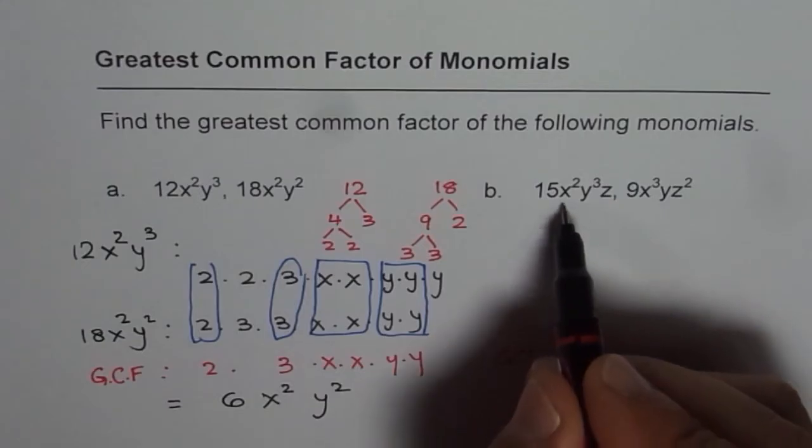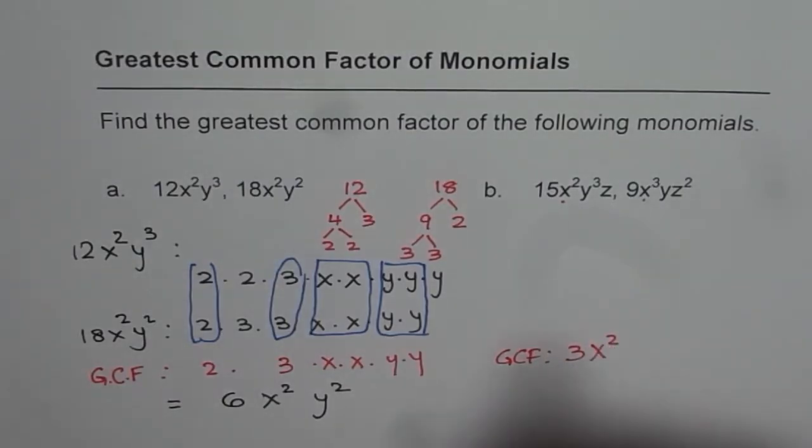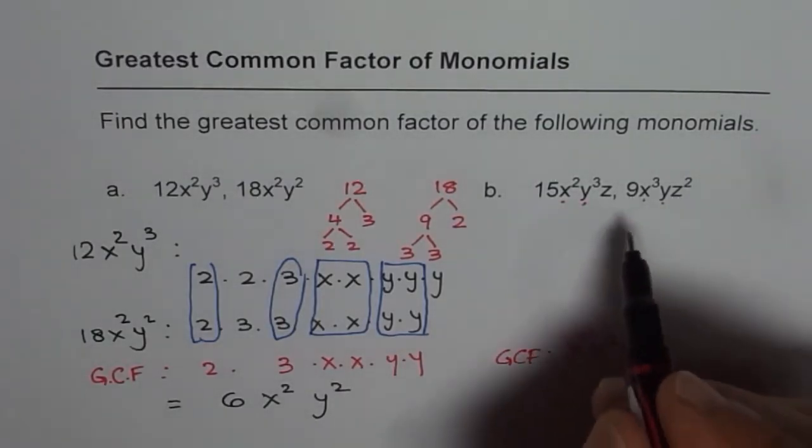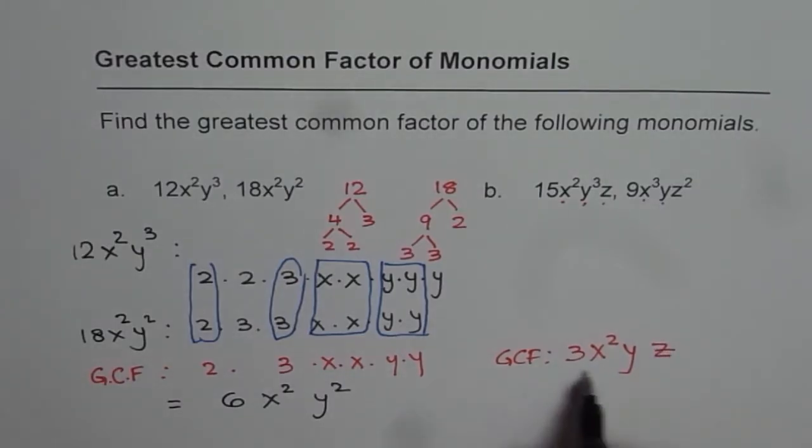Amongst the x's, x² and x³, that means x² is common. y³ and y, that means y is common. z and z² means z is common. So that is the greatest common factor for part b.